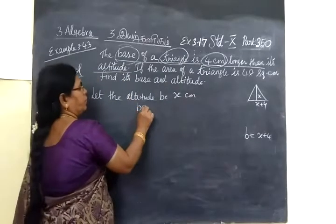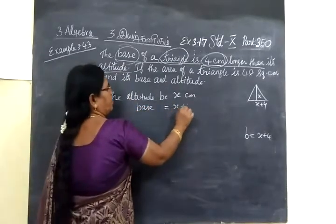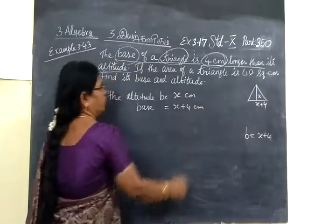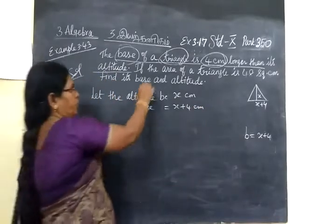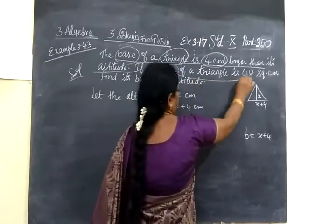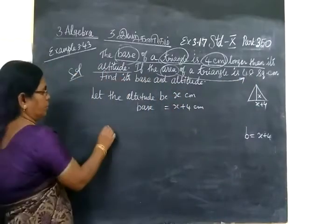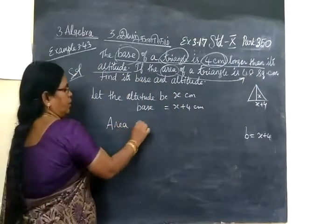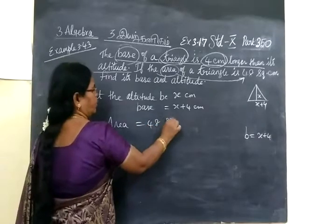So base equals x plus 4 cm. And also it is given area of the triangle is 48 square cm. This means area equals 48 square cm.